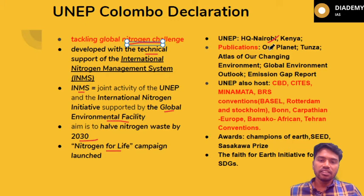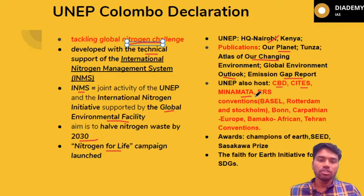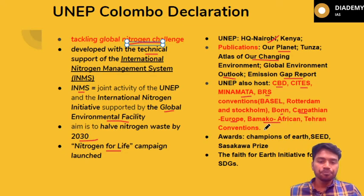Regarding UNEP basics: its headquarters is in Nairobi, Kenya. Its publications include 'Our Planet,' Tunza, 'Atlas of Our Changing Environment,' 'Global Environment Outlook,' and the 'Emission Gap Report' — these have been focus areas for UPSC in recent years. UNEP also hosts conventions on biodiversity, endangered species, CITES, Minamata Convention on mercury pollution, BRS Conventions (Basel, Rotterdam, Stockholm), Bonn Convention on migratory species, and regional conventions like the Carpathian, Bamako, and Tehran conventions. UNEP gives awards like the Champion of the Earth and the Sasakawa Prize, and has an initiative called FAITH for aiding sustainable development goals.